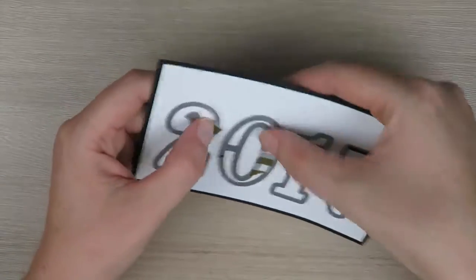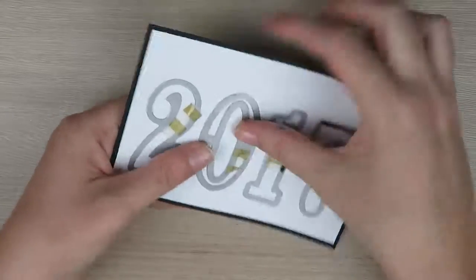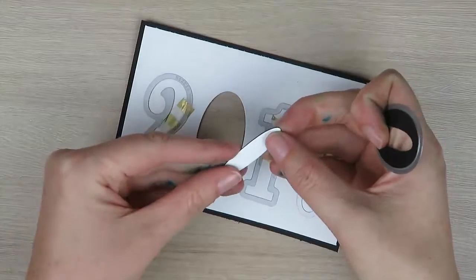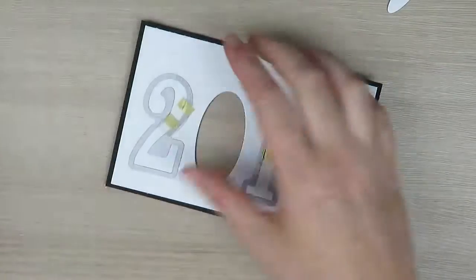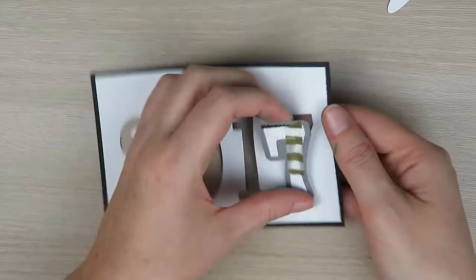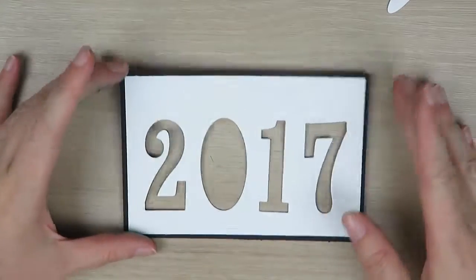So once you've cut that out of your big shot machine, this is what it's going to look like. So I'm just now going to pop out all my numbers and I'm going to keep this little section here from our zero. So pop them out.